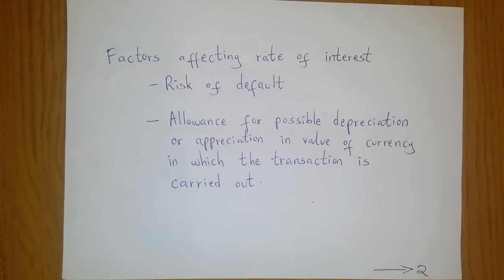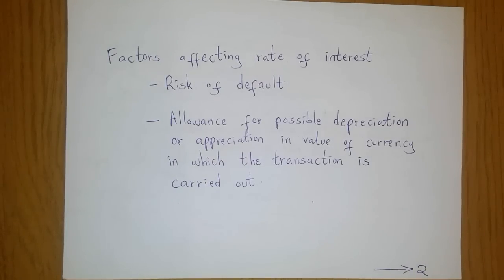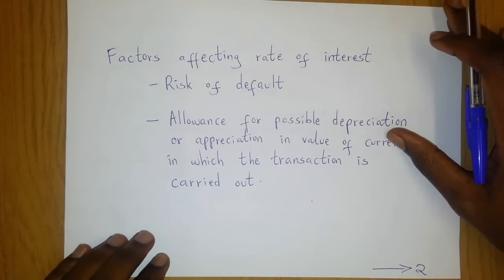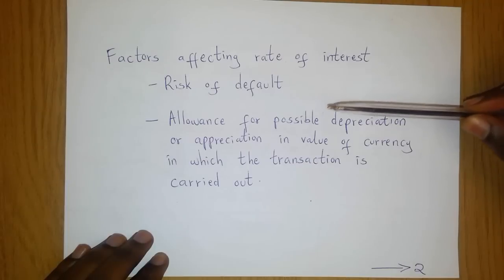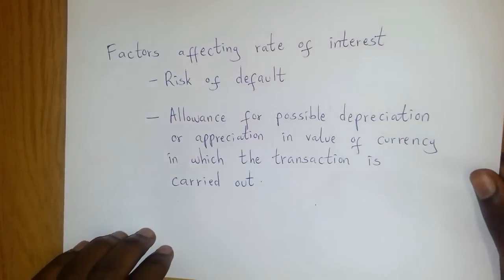Another factor that affects rates of interest is the value of the currency used in the transaction, which is affected by depreciation or appreciation. Depreciation means the value of the currency decreases, while appreciation means the value of the currency increases. At times, the lender wants to take this into account so that the accumulated value they receive at the end of the investment is a true reflection of the value of the currency and the situation of the economy.